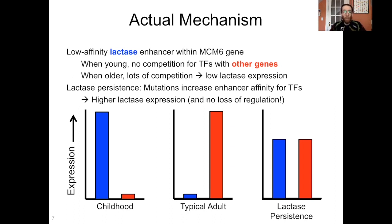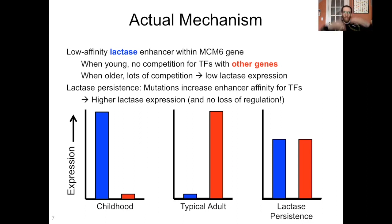In the case of lactase persistence, there are mutations — two main mutations are documented to do this — within that enhancer that increase the affinity of that enhancer for transcription factors, which means during adulthood you're able to maintain high levels of lactase expression even in the face of competition from other genes. I should note that there are no numbers associated with these graphs — they're just schematics designed to show you the relationships, not actual expression level numbers. An important thing to note is that this higher lactase expression in the case of lactase persistence is not associated with any loss of regulation. There are no changes to one's ability to turn that gene off. All you're doing is increasing the affinity of an enhancer, which increases its ability to compete for transcription factors — there's no broken regulatory mechanism involved in that trait.